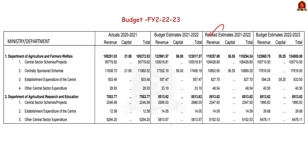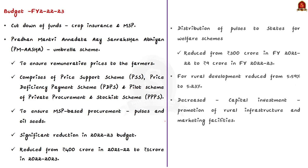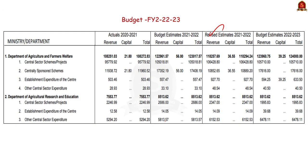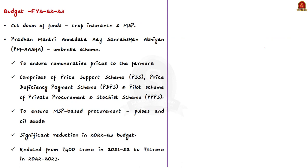Looking at data on current budget allocation towards the agriculture sector, there has been a huge reduction in funds allocation when compared to the revised estimates of 2021-22. This is due to the reduction in fund allocation towards important schemes like crop insurance and Minimum Support Price.